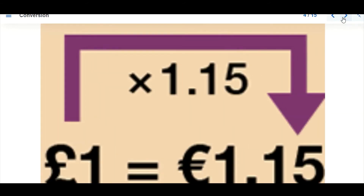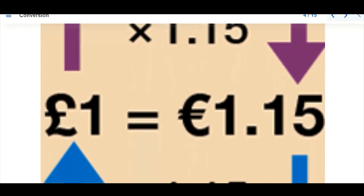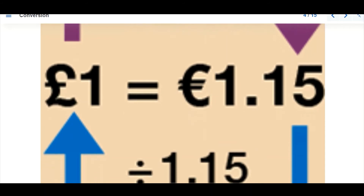Now let's look at how we can convert from one denomination to another. We have an example here: this is one euro — when you multiply by 1.5 it gives us the equivalent amount, and if you want to convert back from 1.15 you divide by that rate to get one euro back. This is just an example of how we convert one currency to another.